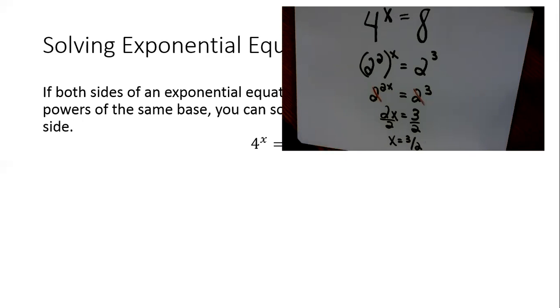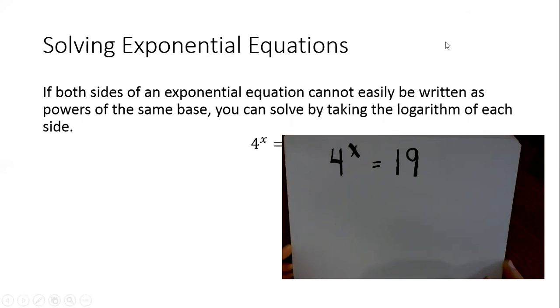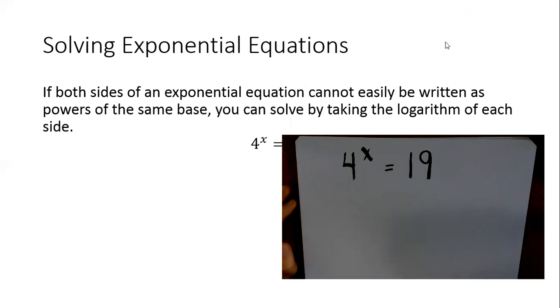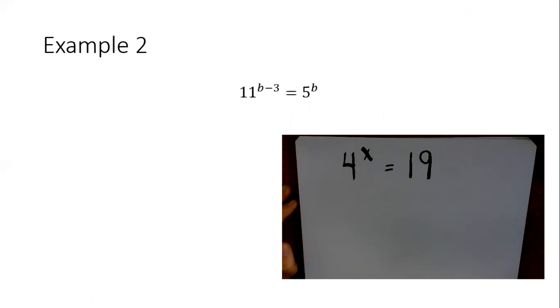So if I change this over, so I have 4 to the X equals 19. It says you can just take the common log of both sides in order to solve this.